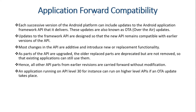The next topic is application forward compatibility. Each successive version of the Android platform can include updates to the Android application framework API. These updates are also known as OTA, or over-the-air, updates. The updates to the framework API are designed so that the new API remains compatible with earlier versions. Most changes in the API are additive and introduce new replacement functions, and as parts of the API are upgraded, the older replaced parts are duplicated but not removed.